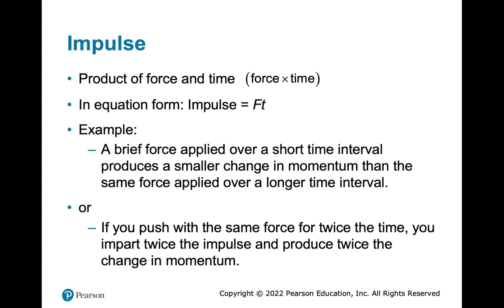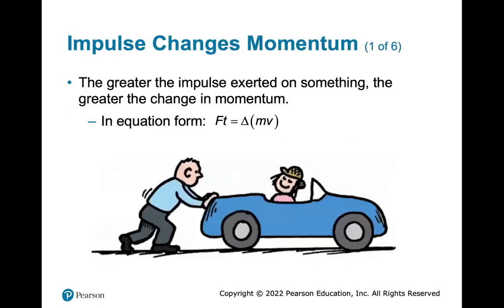Impulse is the product of force and time — force times time. In equation form, impulse equals F times t. A brief force applied over a short time interval produces a small change in momentum, compared to the same force applied over a longer time interval. If you push with the same force for twice the time, you impart twice the impulse and produce twice the change in momentum. The greater the impulse exerted on something, the greater the change in momentum. In equation form, F×t equals delta-momentum — delta means a change. So applying more force or the same force for longer increases the momentum.